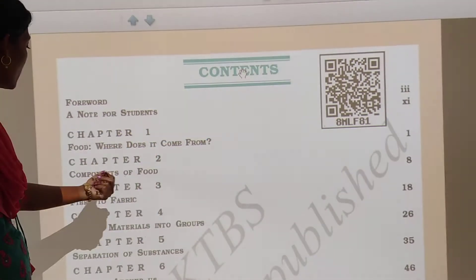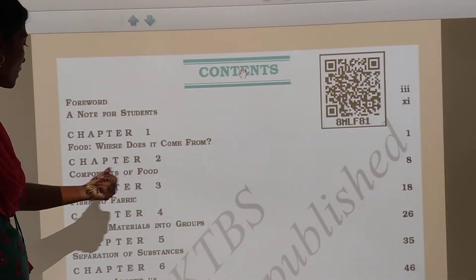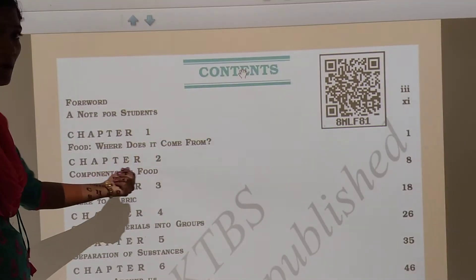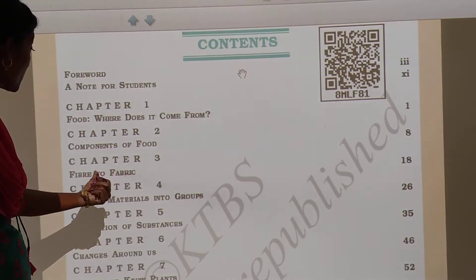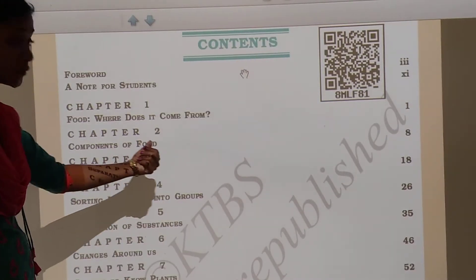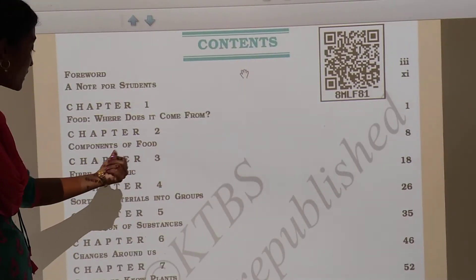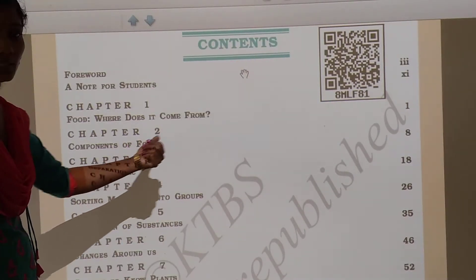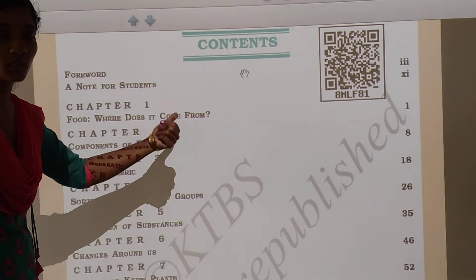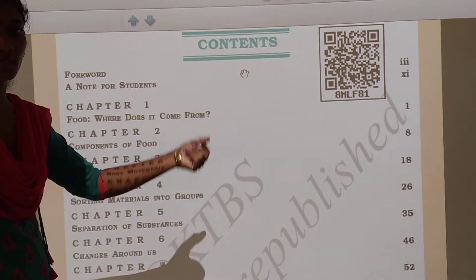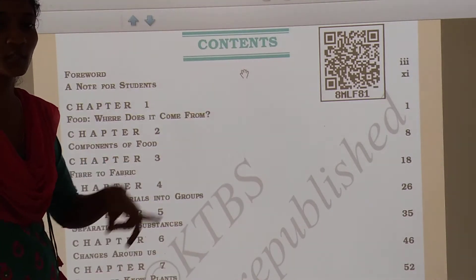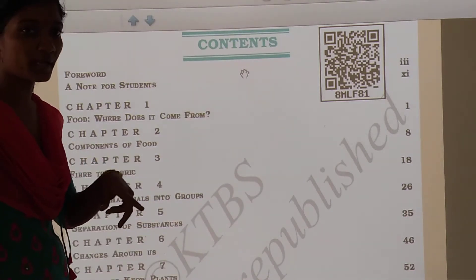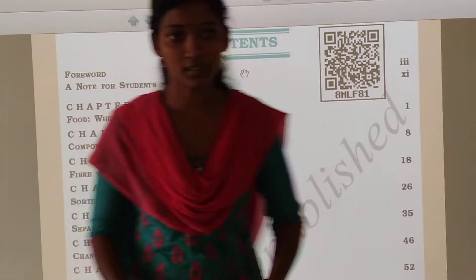Chapter number 2: Components of food. In this chapter we study about carbohydrates, proteins, lipids, vitamins and minerals.